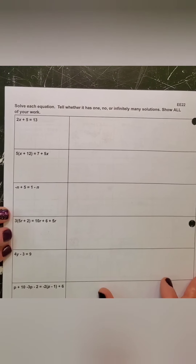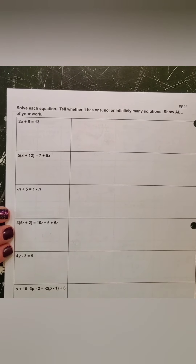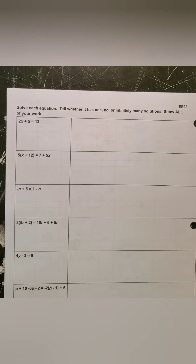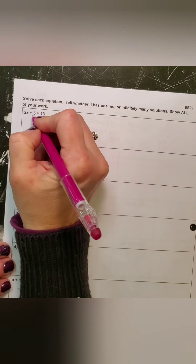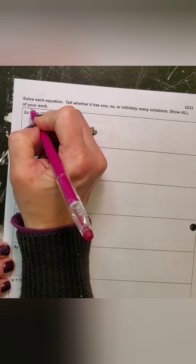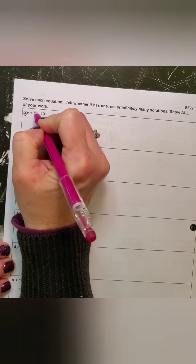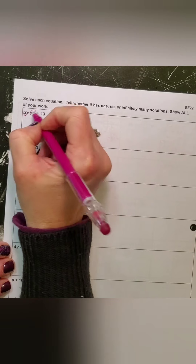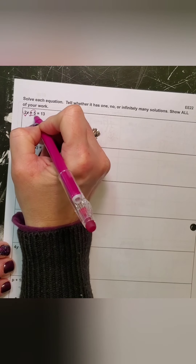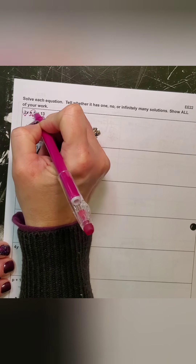2x + 5 = 13. We can look at this right now and know that it has one solution, but we need to know what the solution is. Here's my variable term, here's my constant term — I'm going to subtract 5 from both sides.